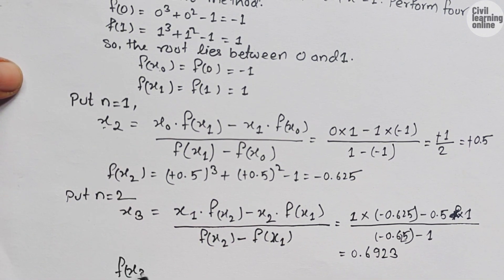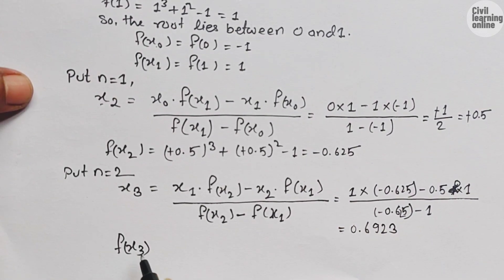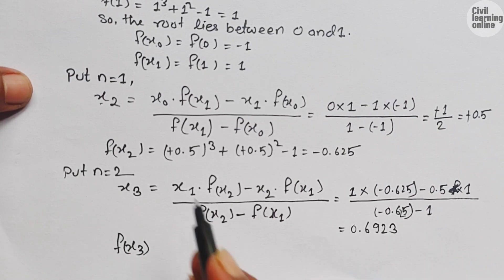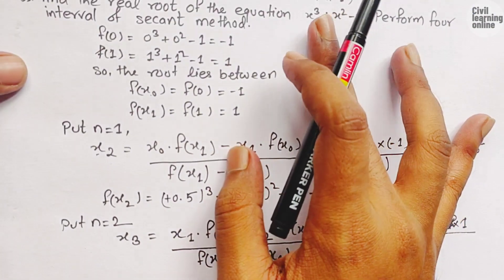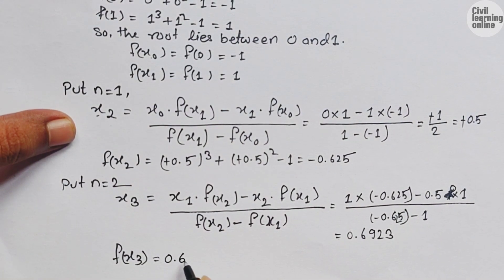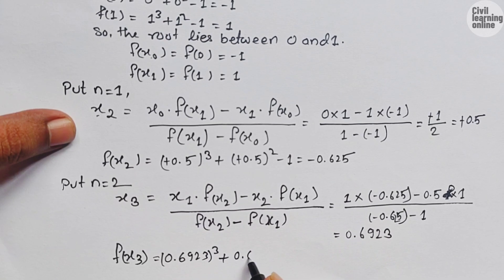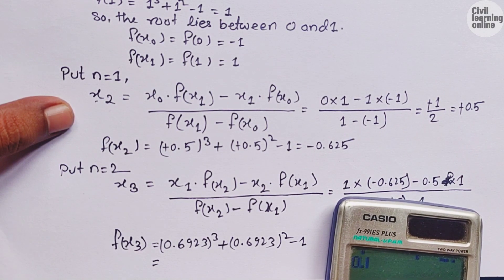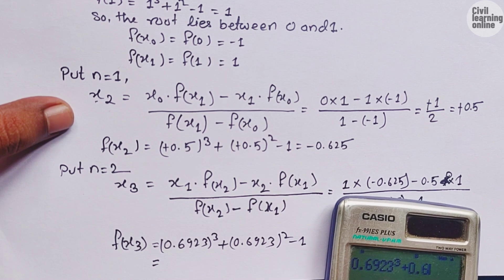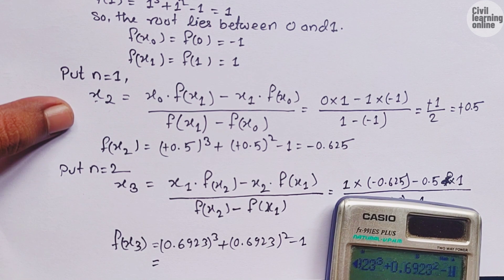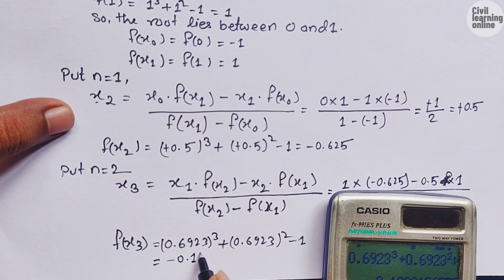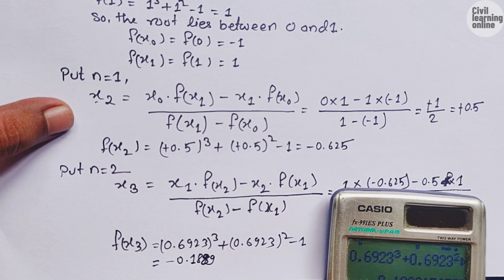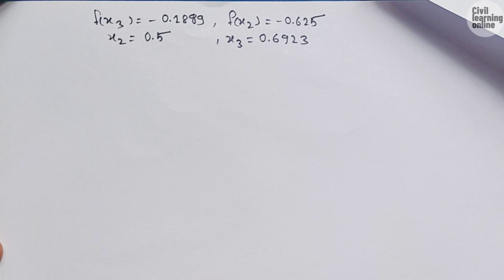After getting x₃ = 0.6923, we calculate f(x₃). Put x = 0.6923 in the equation x³ + x² - 1. So f(x₃) = 0.6923³ + 0.6923² - 1. Solving this, we get f(x₃) = -0.1889.